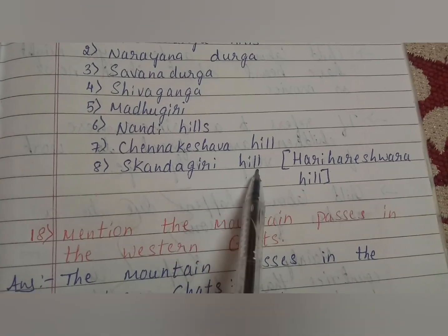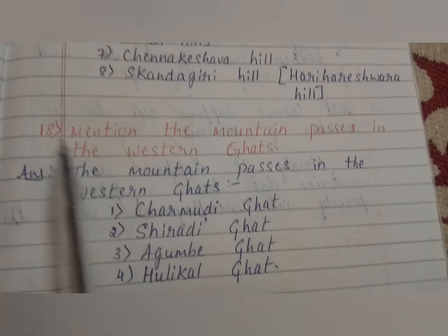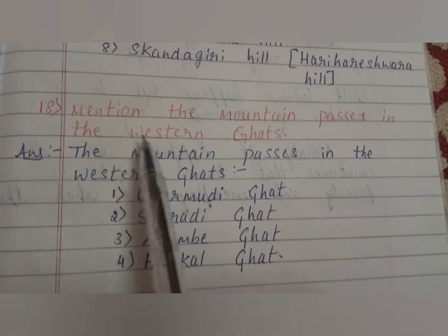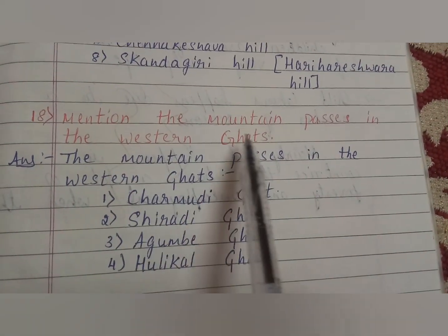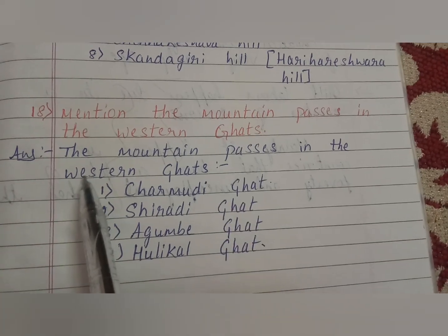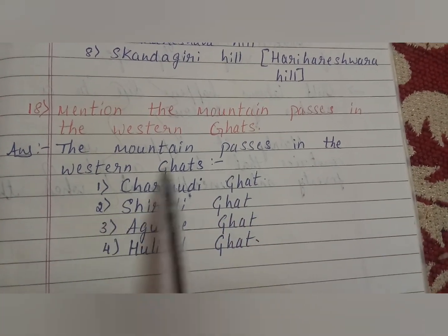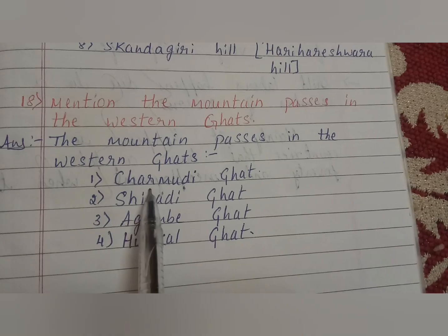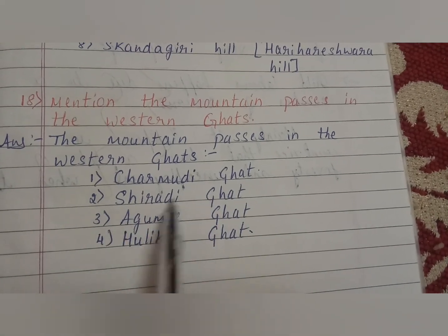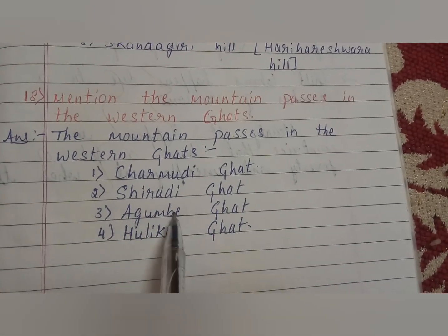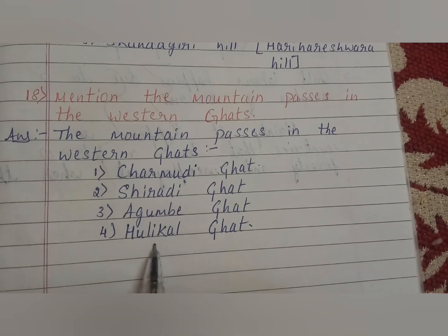Skandagiri is also called Harihareshwara hill. Next question: mention the mountain passes in the Western Ghats. Answer: the mountain passes in the Western Ghats are — first, Chamundi Ghat; second, Shiradi Ghat; third, Agumbe Ghat; fourth, Hulikal Ghat.